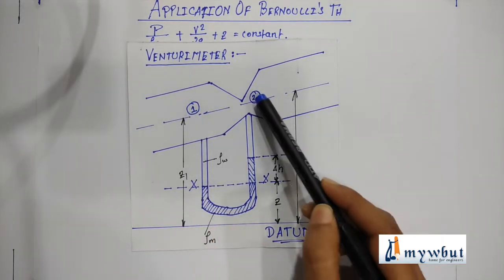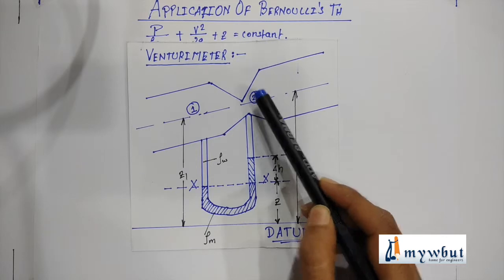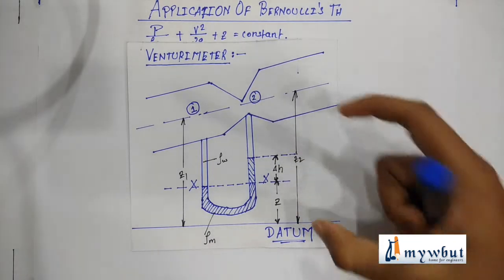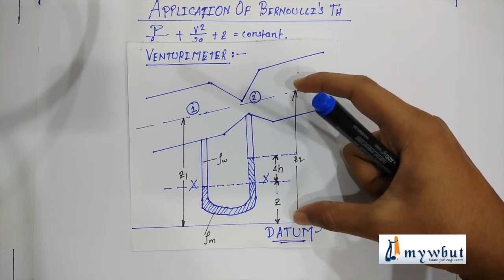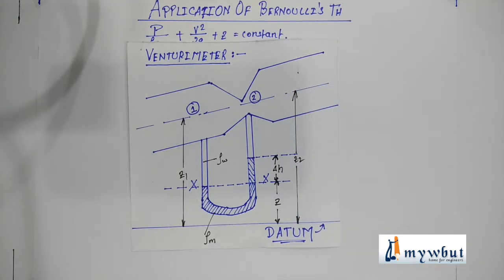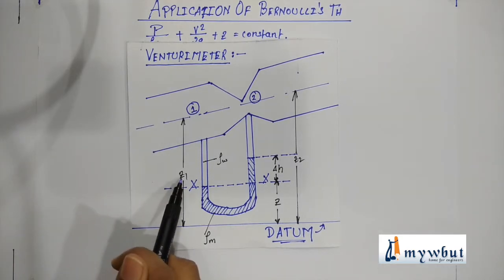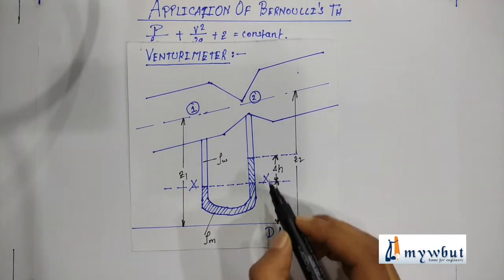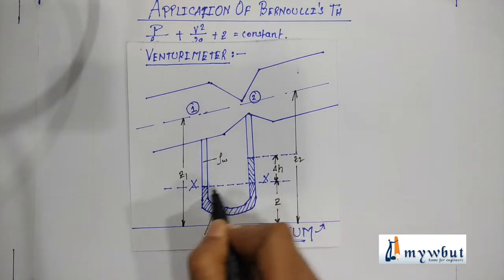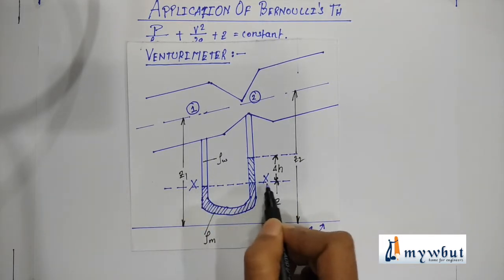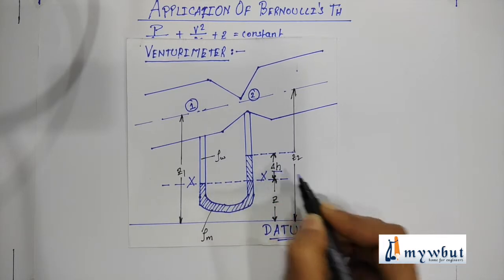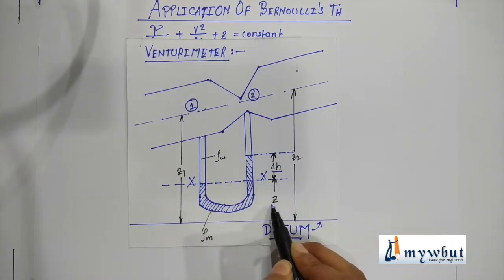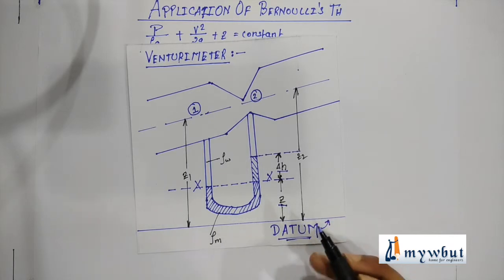Let this point be point number one and this point be point number two. From the datum line, let us take the distance of point number two be z2, and from point one the distance from the datum line be z1. Let the rise from the level of XX be delta h, and let this distance be z.